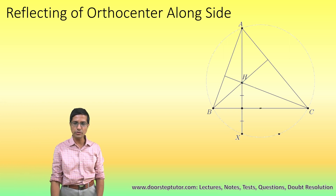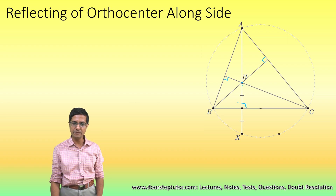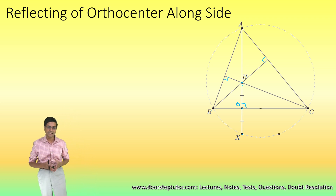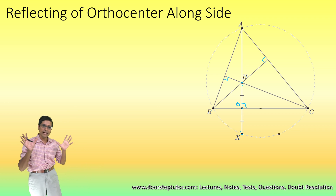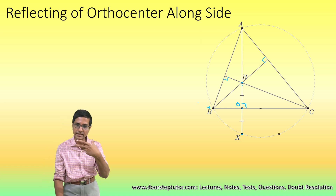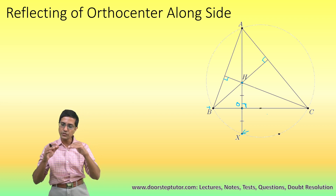The property states that if I take the orthocenter of a triangle — the point where all the altitudes meet — and reflect it along one of the sides, extending line HO by the same amount downwards so that OX equals HO, then point X lies on the circumcircle, the same circle on which the vertices of the triangle lie. That is the useful property of the orthocenter: its reflection along one of the sides lies on the circumcircle.